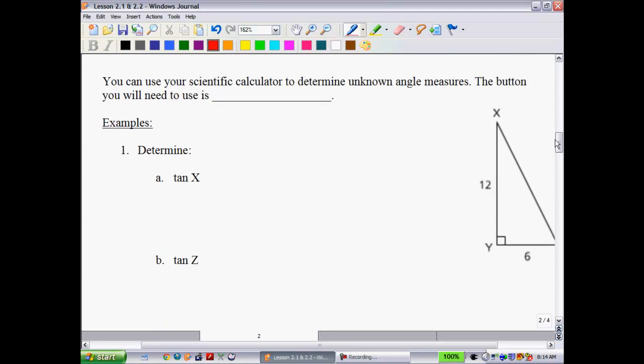So you're definitely going to need your scientific calculator for this. There are ways of doing trigonometry without using a calculator, using a table. In this course, though, we're going to be using our scientific calculators. So you can use your scientific calculator to determine unknown angle measures. The button you'll need to use looks like this. It is the tangent inverse button. So it has a tan and a little negative 1, but it's read as the tangent inverse.